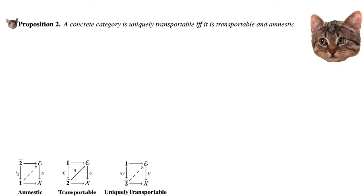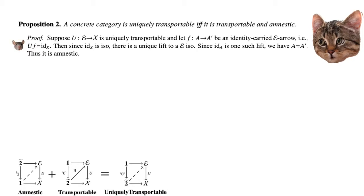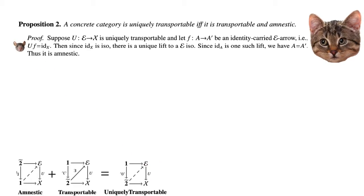The second result is that a concrete category is uniquely transportable if and only if it is transportable and amnestic. For the proof: suppose U: E → X is uniquely transportable and let F: A → A' be an identity-carried E-arrow, i.e., UF equals the identity on X. Since the identity on X is an isomorphism, there exists a unique lift to an E-isomorphism because it is uniquely transportable. Since the identity on A is one such lift, we necessarily have A equal to A', so it is amnestic.